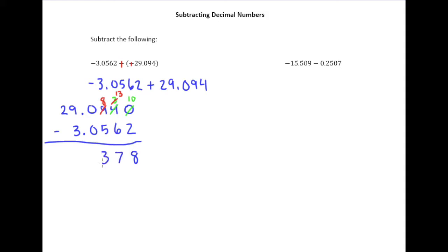Eight minus five will give me three. Zero minus zero gives me zero. Drop that decimal point straight down. Nine minus three is six. And two minus zero is two.